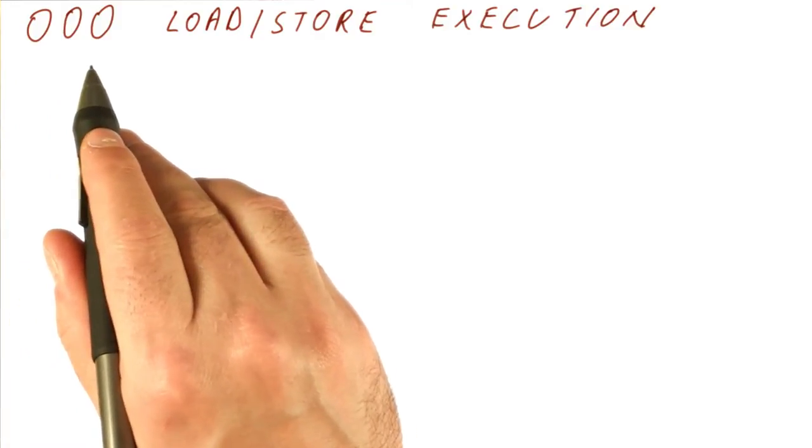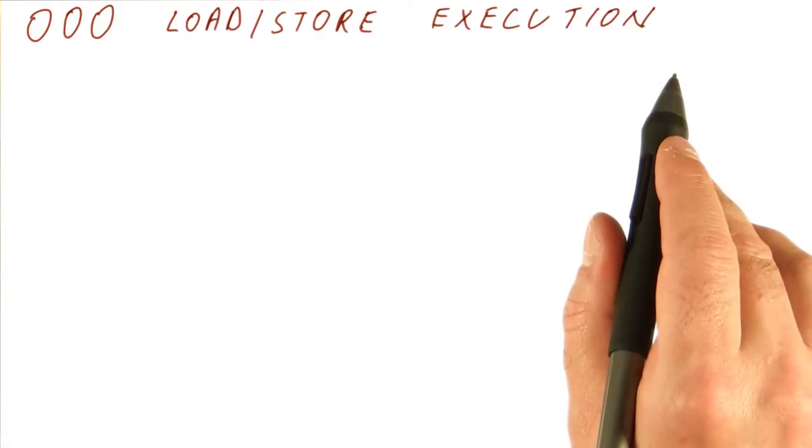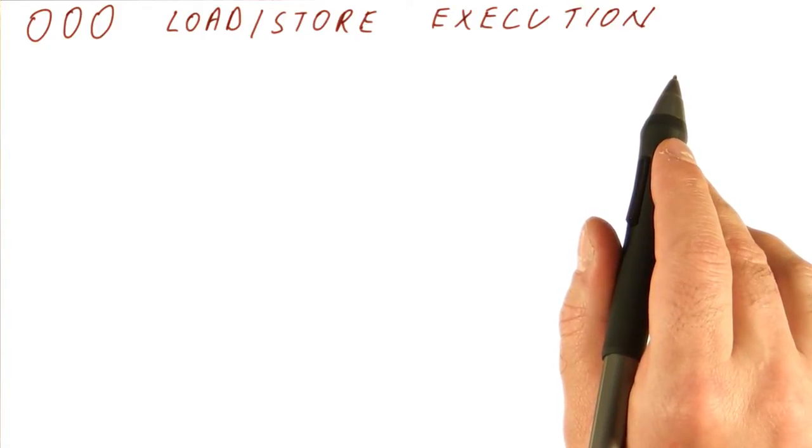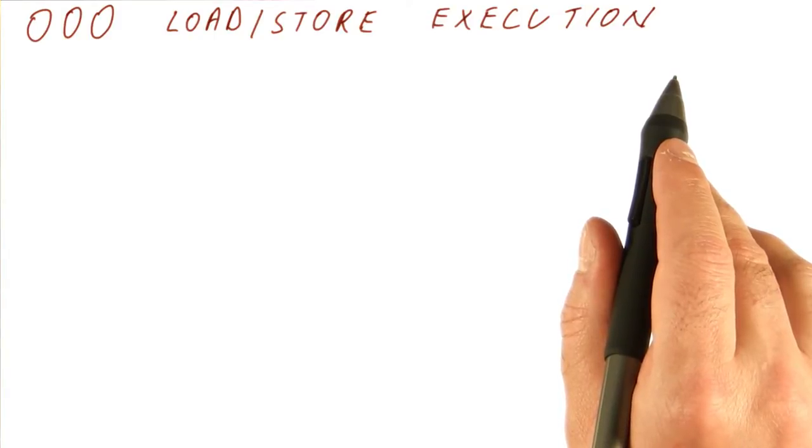So now, let's see what happens when we do out of order load store execution. That is, we try that aggressive approach of loads going to memory as soon as they know the address, if there is no preceding store that resolves to the same address, and it later turns out that a store has been resolved to the same address.